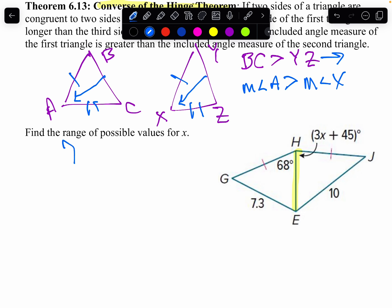So I'll write that down. 7.3 is smaller than 10. Well, that tells me the angle across from 7.3, 68, is smaller than the angle across from 10, which is 3X plus 45.